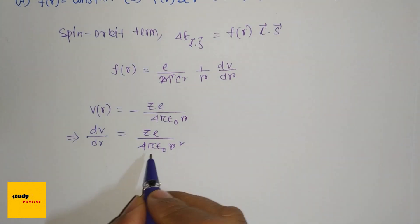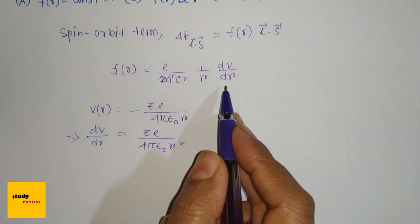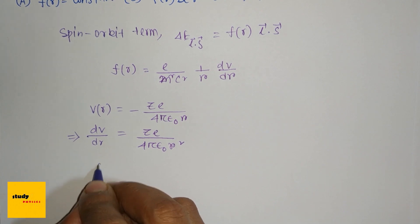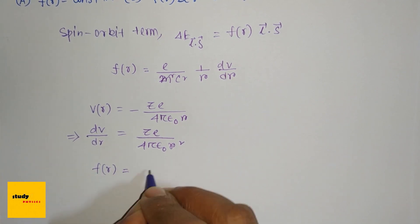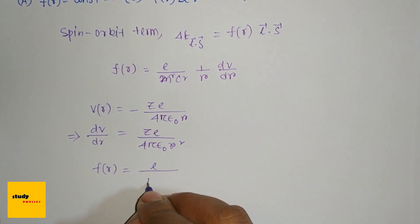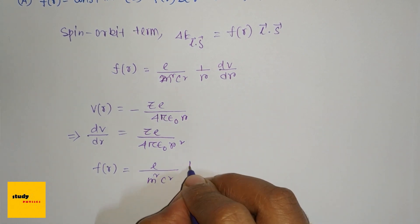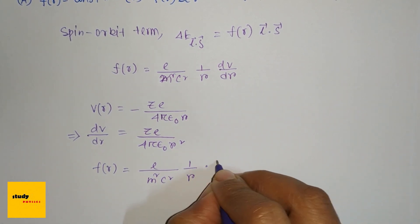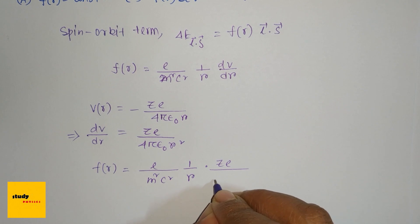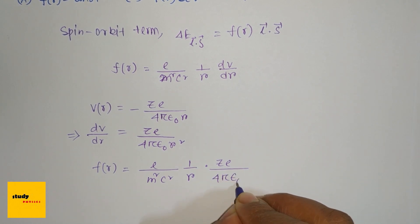Just putting this dV/dr value here. Now f(r) = e/(m²c²) × (1/r) × Ze/(4πε₀r²).